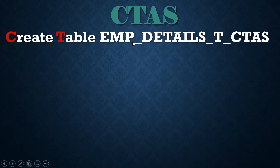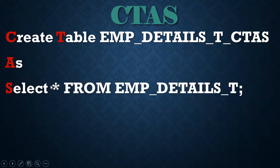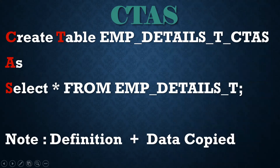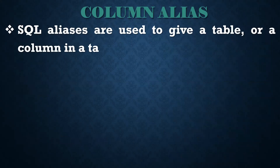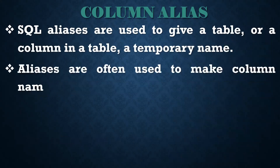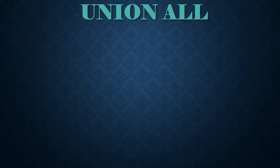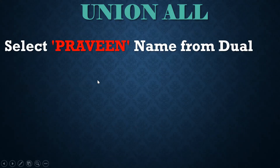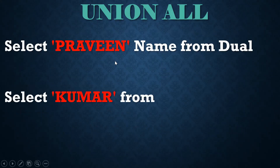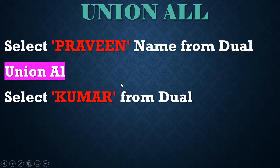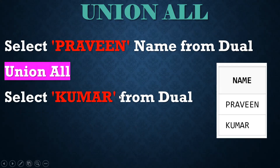CTAS means: CREATE TABLE table_name AS SELECT * FROM old_table - this is used for backup purposes. Column alias is used to give a proper, meaningful name to any column. UNION is a set operator - for example, SELECT 'Praveen' gives one result set and SELECT 'Kumar' gives another; using UNION we can club them into a single result set.